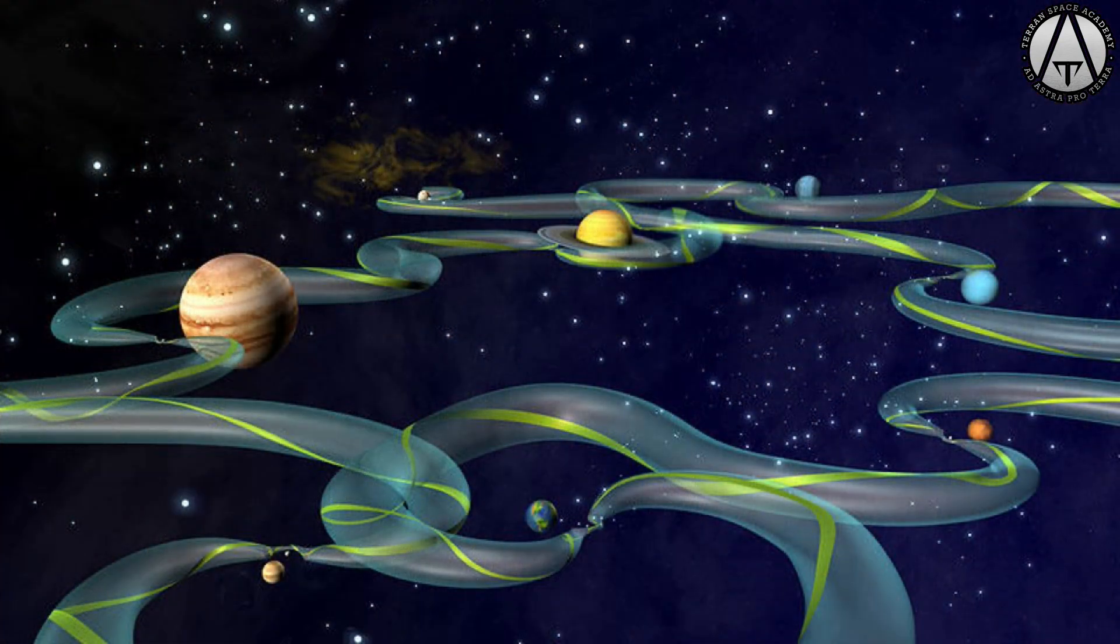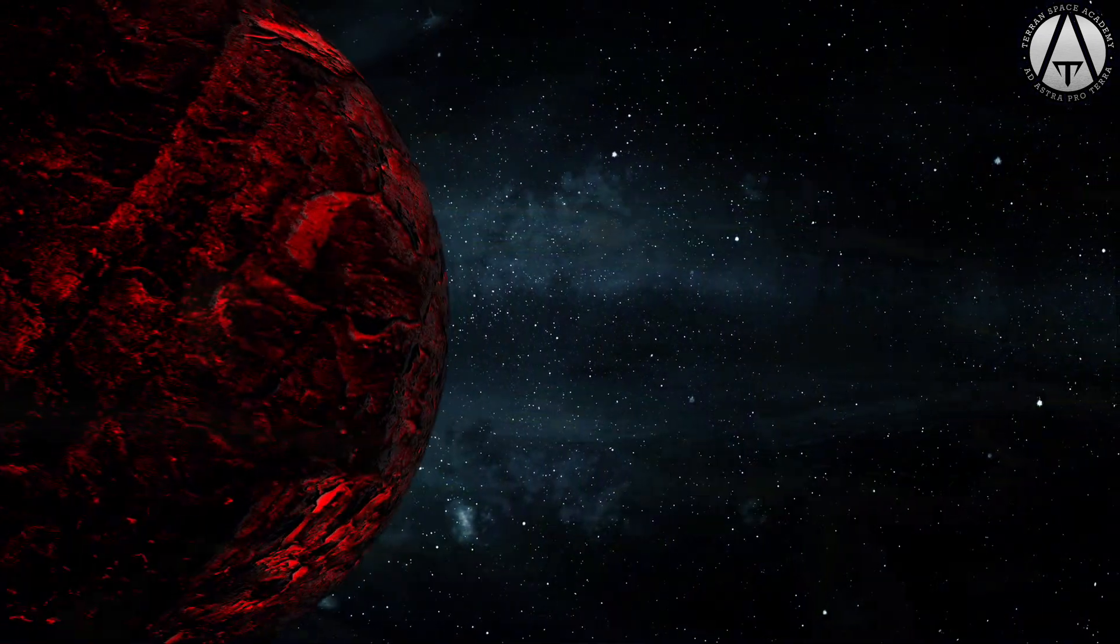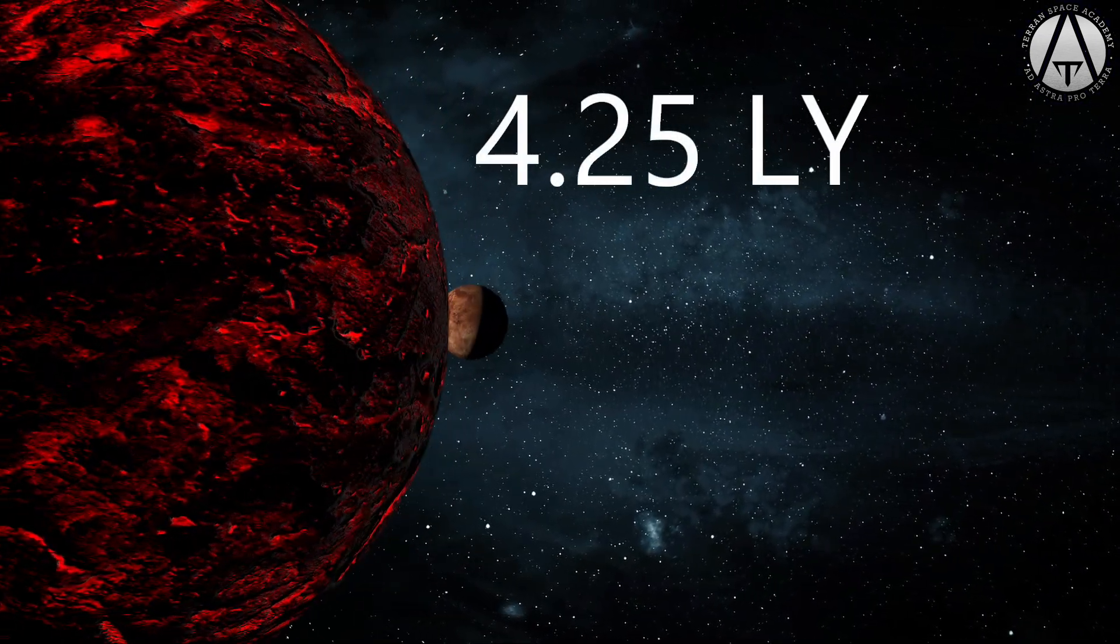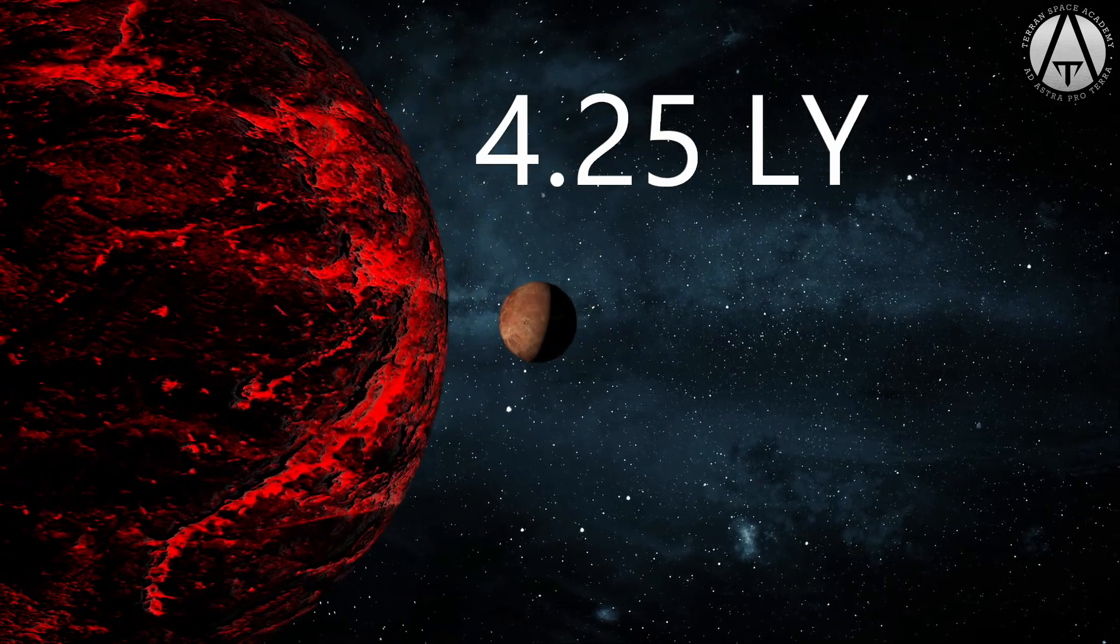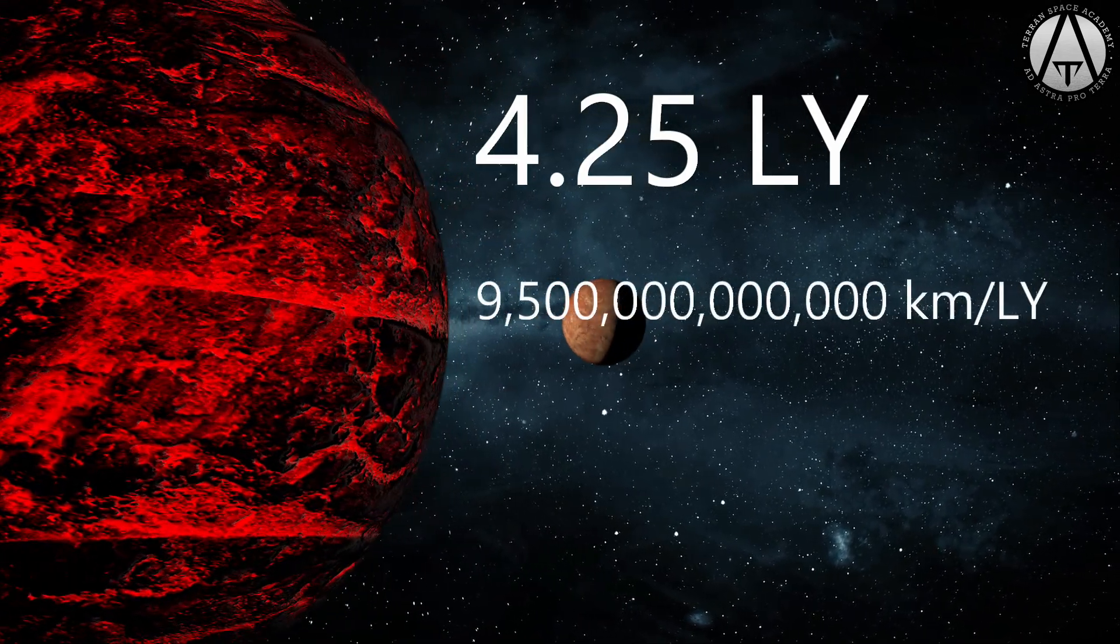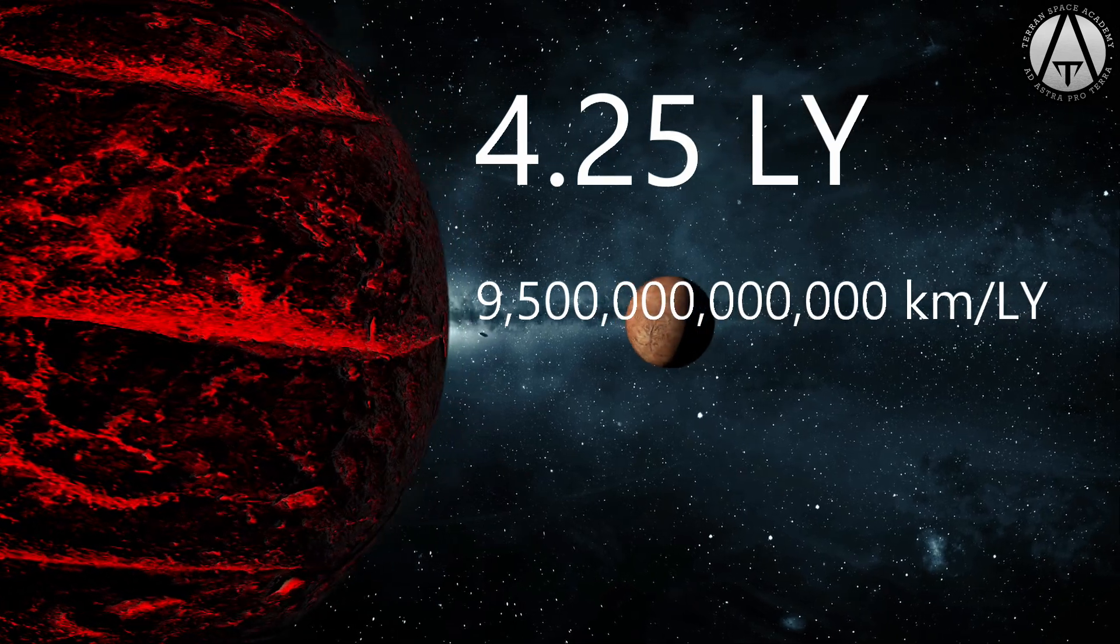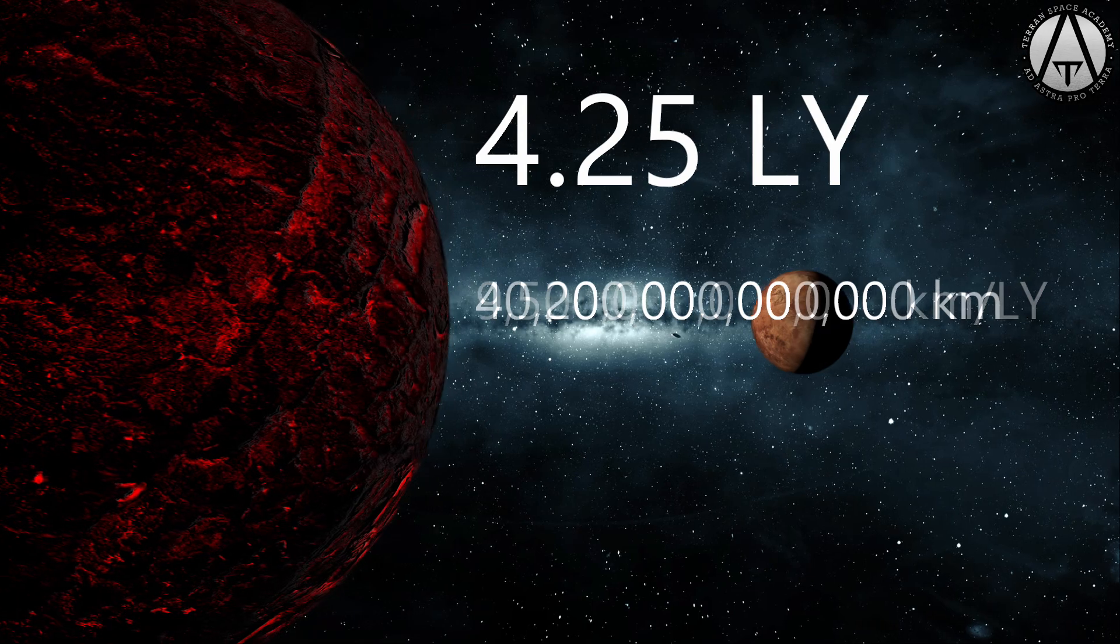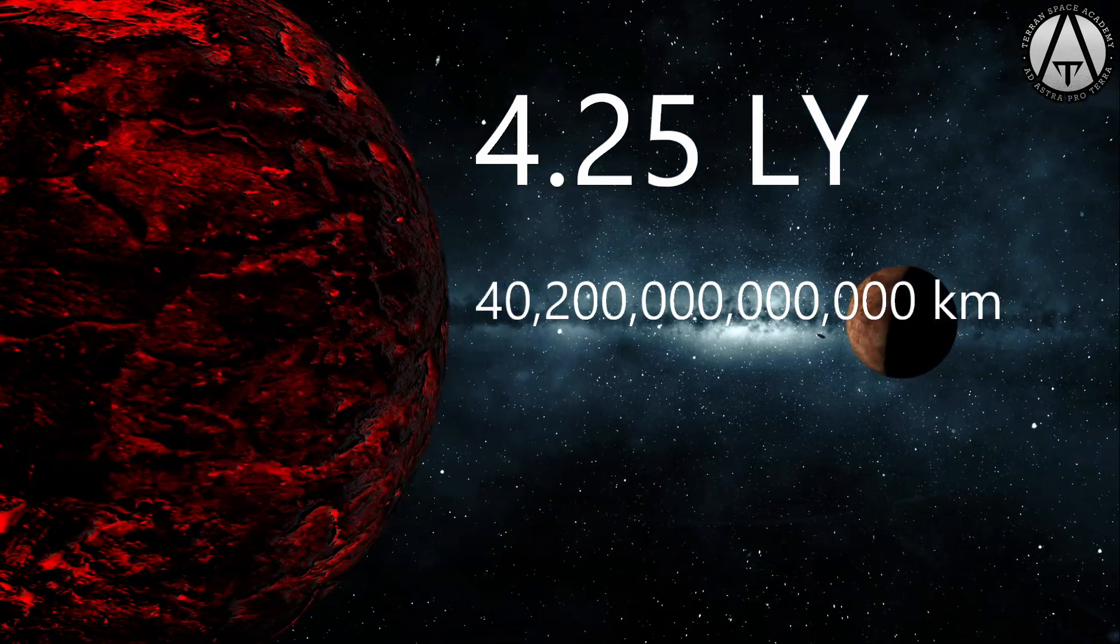But this doesn't help us to get to other star systems. The nearest star to us is Proxima Centauri, 4.25 light years away. A light year is the distance light would travel in one year. This is about 9.5 times 10 to the 12th, or 9.5 trillion kilometers. That puts Proxima Centauri about 40.2 trillion kilometers away. It would take thousands of years for our fastest rockets to get there.